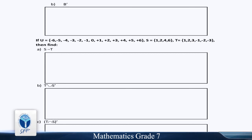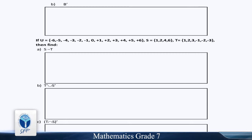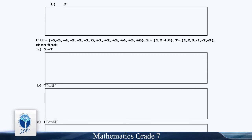If U = {-6, -5, -4, -3, -2, -1, 0, +1, +2, +3, +4, +5, +6}, S = {1, 2, 4, 6}, and T = {1, 2, 3, -1, -2, -3}, then find: S minus T, T complement union S complement, T intersection S complement, T minus S complement, S minus T complement, T complement intersection S complement, and T union S complement.